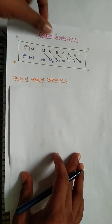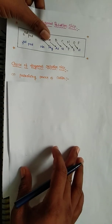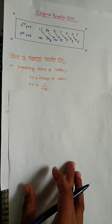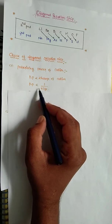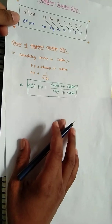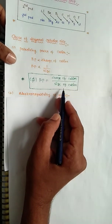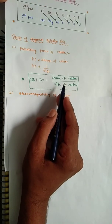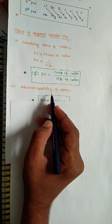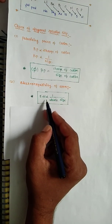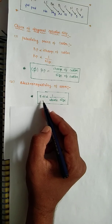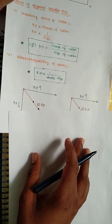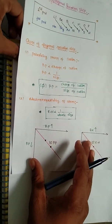There are two important points explaining the diagonal relationship. The first is the polarizing power of a cation. The polarizing power of a cation is directly proportional to the charge of the cation and inversely proportional to the size of the cation. Therefore, polarizing power equals charge of the cation divided by size of the cation. The second point is electronegativity of the atom, which is inversely proportional to atomic size.